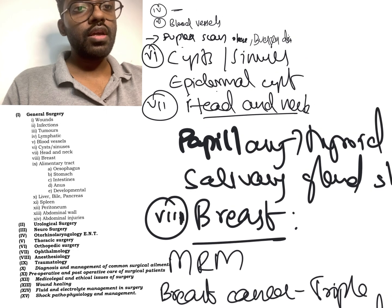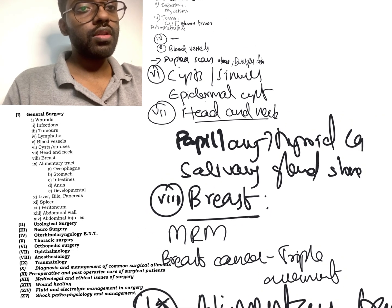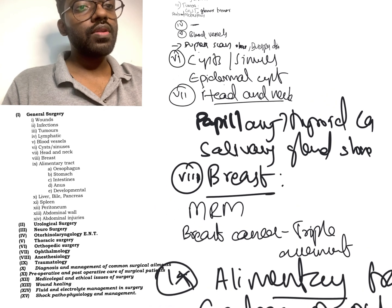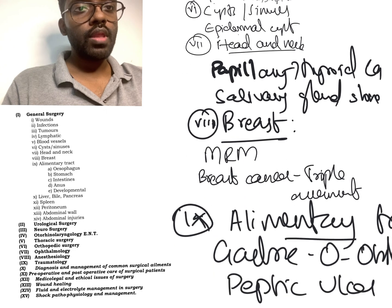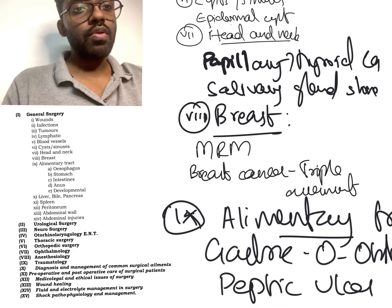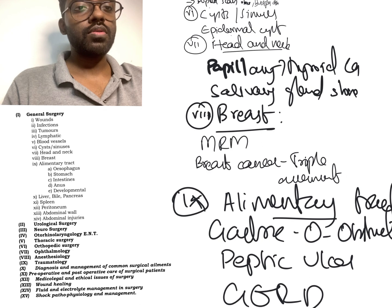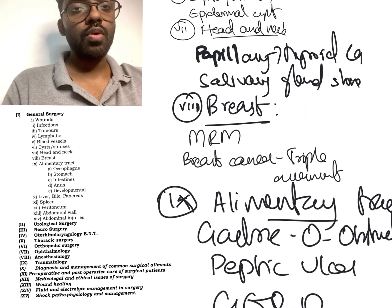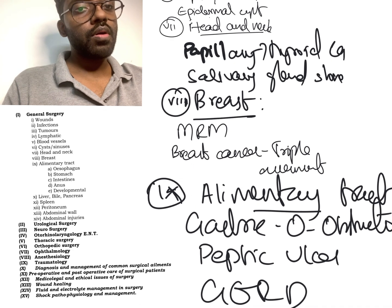The seventh topic is head and neck. In 2022, questions came on papillary thyroid cancer and salivary gland stones. The eighth topic is breast, which is a very important topic — there will always be a question from this section. Questions asked included modified radical mastectomy (MRM) and breast cancer triple assessment, which is related to screening.